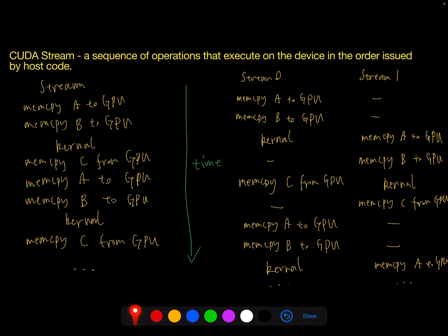One advantage of using CUDA streams is that people use multiple streams to parallelize and improve the application. We already know parallel computing in CUDA — each thread and each block can help us speed up the application. Using multiple streams is another advanced technique to parallelize things, but at a different level. In a multiple-streams application, it is more like high-level parallelism. The assumption is that memory copy and the kernel execution on the GPU are handled by different computation units.